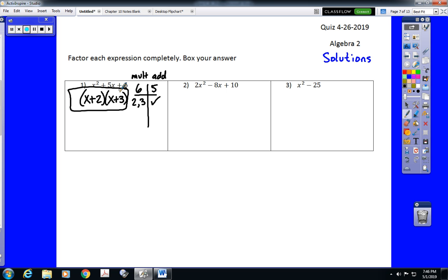Number two has a GCF, so our first step should be to remove the GCF. Now, the big mistake here was that people thought that the GCF just disappears. It does not. We factor out that two, and now we have two times the trinomial x squared minus four x plus five.